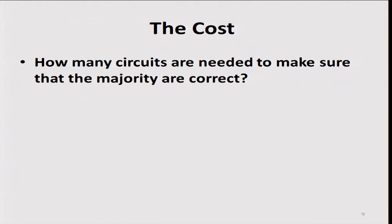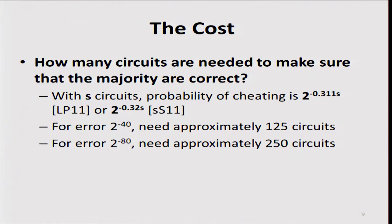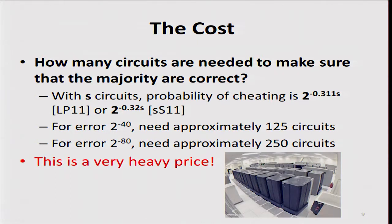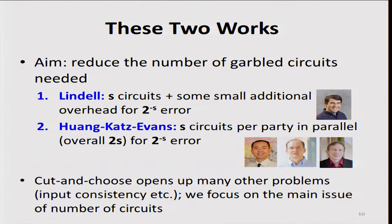The main question is: what's the cost of this cut-and-choose? How many circuits do we need to ensure the majority are indeed correct? This is a simple combinatorial question. With tight analysis from 2011, we get approximately 2 to the minus s over 3 error. It turns out that if you want error of 2 to the minus 40, you need about 125 circuits. If you want a statistical error of 2 to the minus 80, a very strong level, you need approximately 250 circuits. Even just looking at 125, this is very, very expensive. The aim of both of these works is to reduce the error from 2 to the minus s over 3 to something lower.